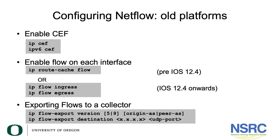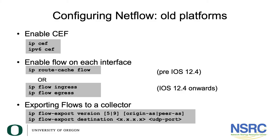The slide shows how we configure NetFlow on the platforms. First, we need to make sure that CEF — Cisco's Express Forwarding — is enabled. For most modern platforms this is turned on by default, but on older routers it may not be. CEF is Cisco's way of indicating that the router has a separate forwarding table and routing table, so 'ip cef' and 'ipv6 cef' will make sure this is turned on.